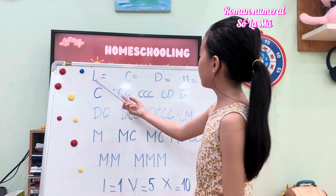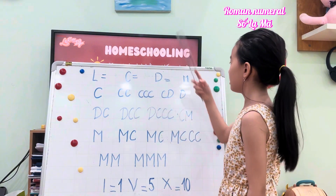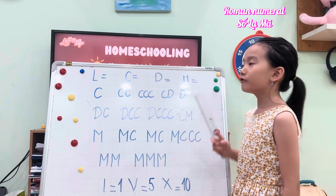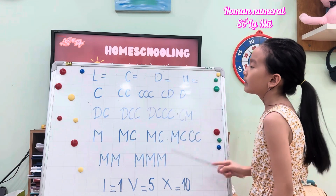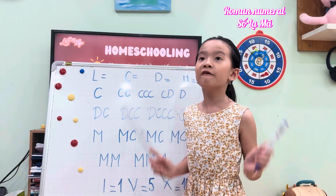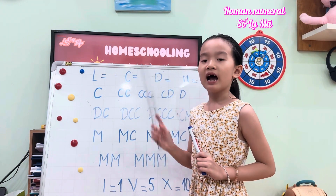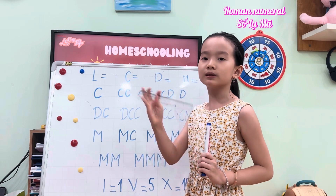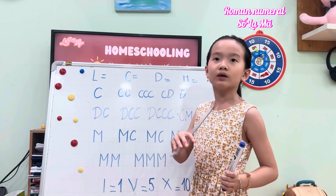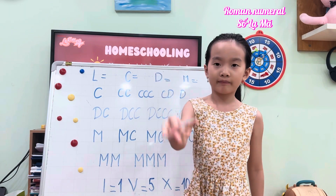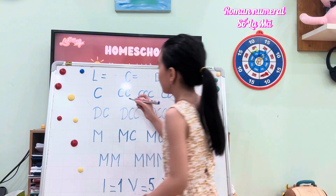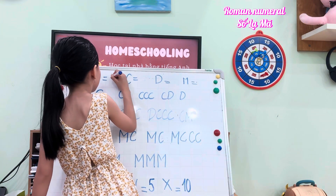Now we're going to learn about the L, the C, the D, and the M. First of all, L equals 50. L equals 50. Say that — L equals 50. Good job. L will equal 50.